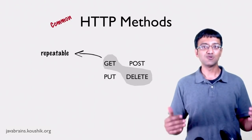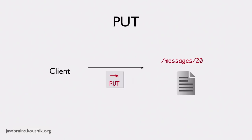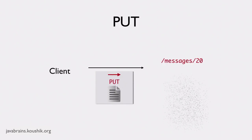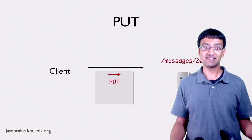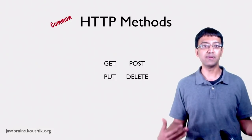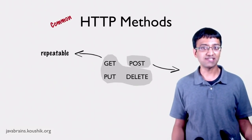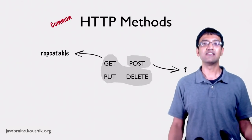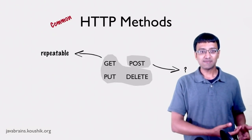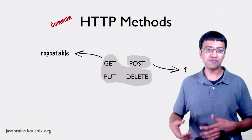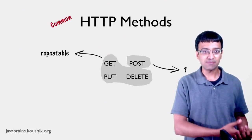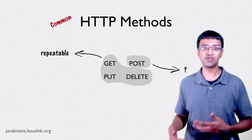How about PUT? Say you make a PUT request to /messages/20 with some message text in the request body. This replaces whatever was message ID 20 with the new message text. If you make the exact same call again, message ID 20 is replaced with the exact same text again. Make it a third time and the result is still the same. So PUT is also safe when it comes to making multiple calls. If you accidentally repeat a PUT request, the final saved message remains the same after every request.